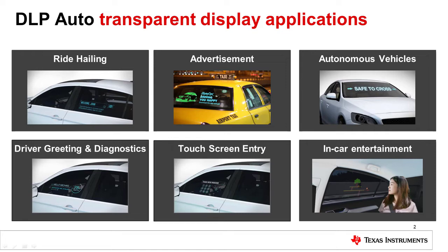In an autonomous vehicle application, the transparent display could be used to communicate with pedestrians and other vehicles. In the example shown here, the front windscreen is indicating that it is safe to cross in front of the vehicle.